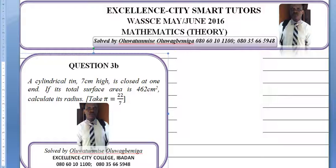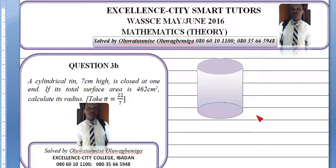Now, this is a question on mensuration. We are told about a cylindrical tin, something like this. This is a cylindrical tin, and we are talking about the total surface area of the cylindrical tin.